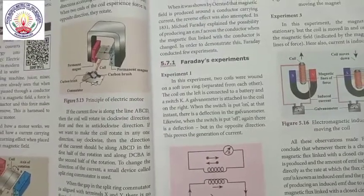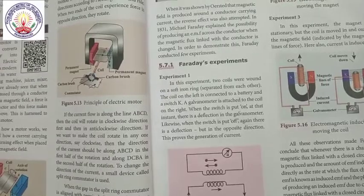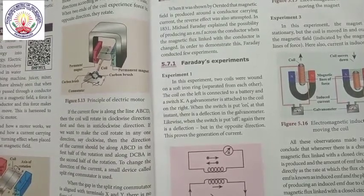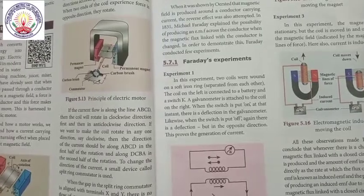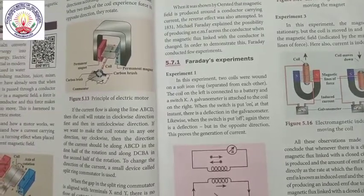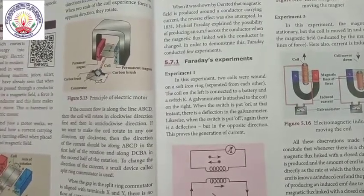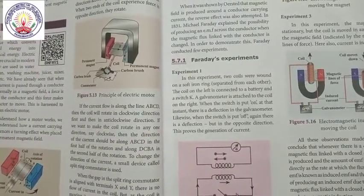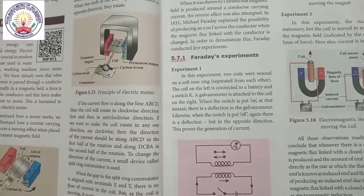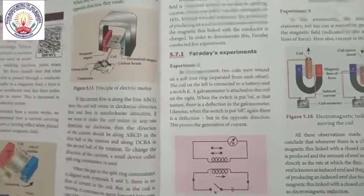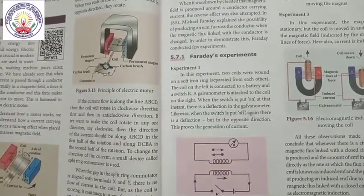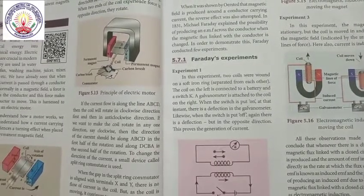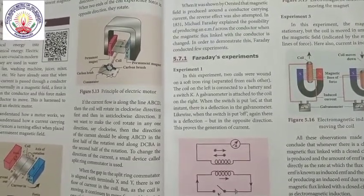Faraday's first experiment: Two coils were wound on a soft iron ring. The left coil is connected to a battery and a switch K. A galvanometer is attached to the coil on the right. When the switch is turned on, there is a deflection in the galvanometer. Likewise, when the switch is turned off, there is a deflection in the opposite direction. This proves the generation of current.